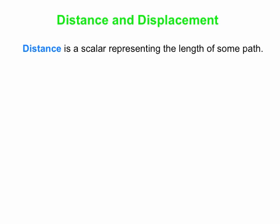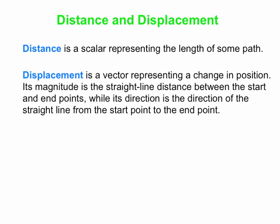Now let's spend a few minutes on the start of motion, beginning with distance and displacement. Distance is a scalar — it has no direction and just represents the length of the path traveled. Displacement is a vector: it represents a change in position, its magnitude is the straight-line distance between start and end points, and its direction points from the starting point to the ending point.